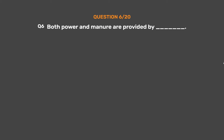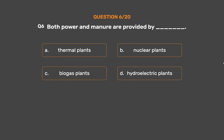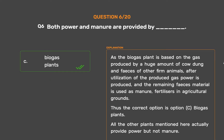Question number six: both power and manure are provided by underscore. Option A: thermal plants. Option B: nuclear plants. Option C: biogas plants. Option D: hydroelectric plants. The correct answer is option C, biogas plants. The biogas plant is based on gas produced by a huge amount of cow dung and feces of other farm animals. After utilization of the produced gas, power is generated, and the remaining material is used as manure fertilizer in agricultural grounds. All other plants mentioned provide power but not manure.